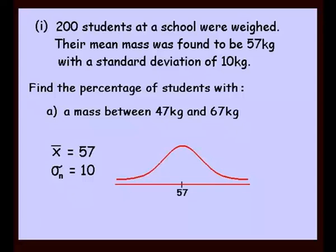So we mark in our 57. Now our standard deviation is 10. If we add 10, we come up with 67. If we subtract 10, we come up with 47. And that's what we're interested in in this example. The percentage of students within that range. Now we've just gone up and down one standard deviation. Our result is 68%. So there would be 68% of students who weigh somewhere between 47 and 67. So there's our answer, 68%.